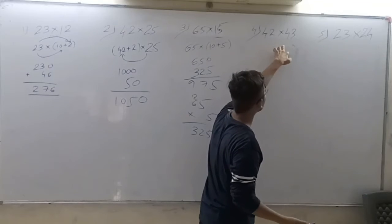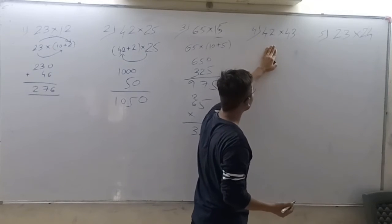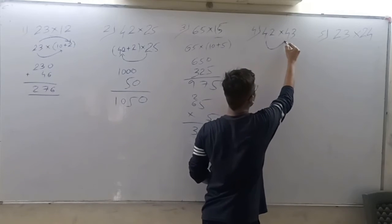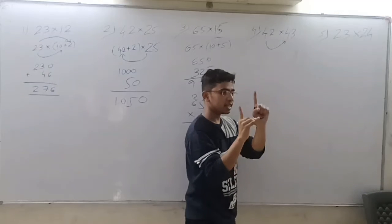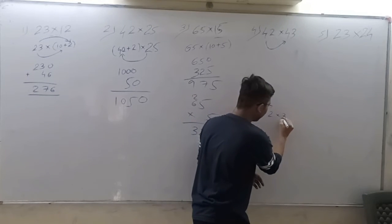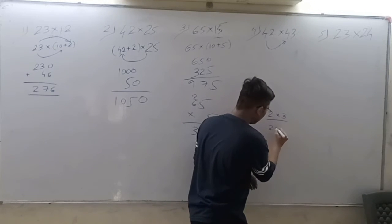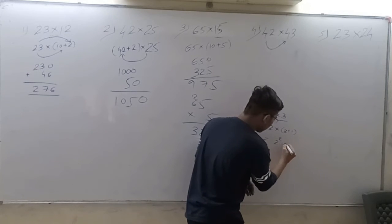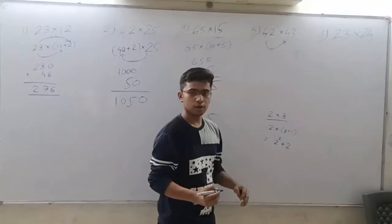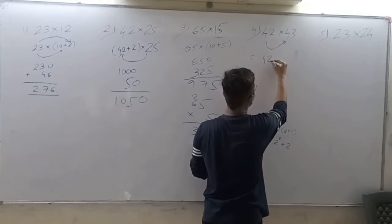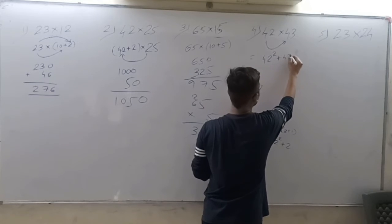42 cross 43. Now in this what will happen? This is a simple logic. 42 is there, and 43 means, that is 1 more than 42. If you write 2 cross 3, what does this mean? 2 cross 2 plus 1, which means 2 square plus 2. This will be it. Now what we'll do: 42 square plus 42.